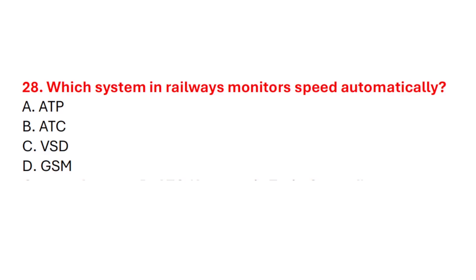Question 29. Which system in railways monitors speed automatically? Correct answer is option B: ATC — Automatic Train Control.